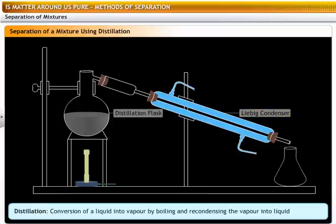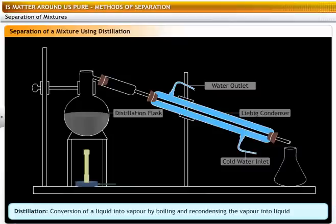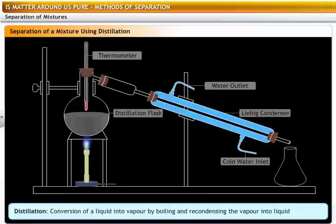The Liebig condenser is a long glass tube within a glass jacket with an inlet and outlet for water. The open end of the flask is fitted with a one-hole rubber cork through which a thermometer is introduced.